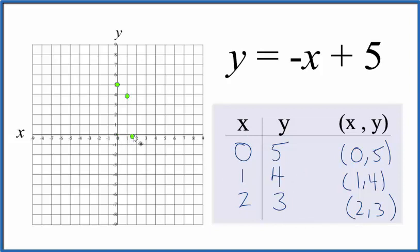Let's put a line through that, and then we'll put arrows here to show that this goes to infinity. So this is the graph for y equals negative x plus five.